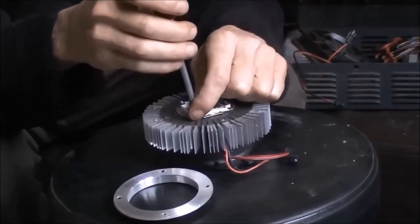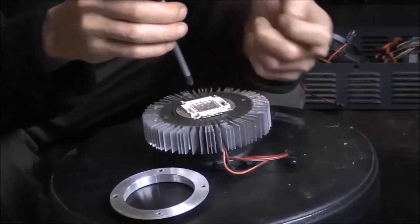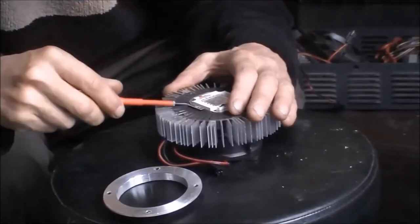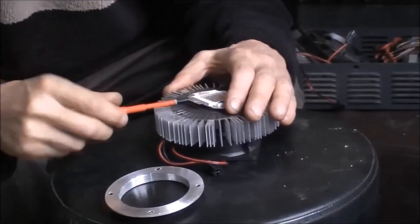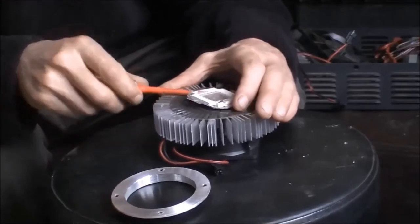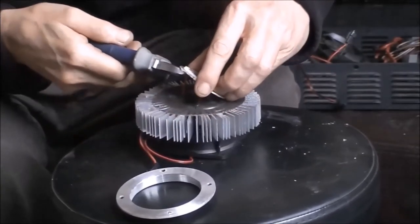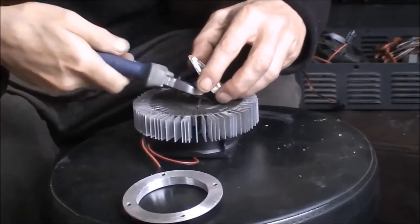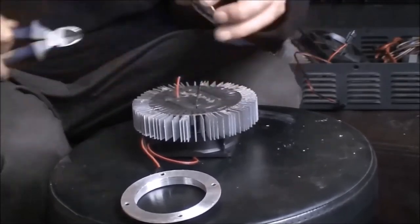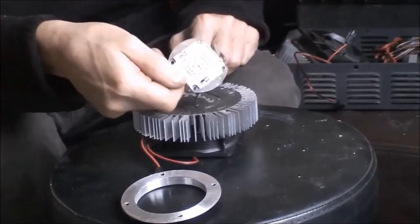And it's a bit of a fiddly little job just unscrewing all the COBs, carefully prising them off the heat sink. I'm not really worried about damaging the COB, but I am concerned about any damage to the heat sink. We want a nice flush, flat, smooth surface to accept the heat sink. Yeah, file that in the bin.